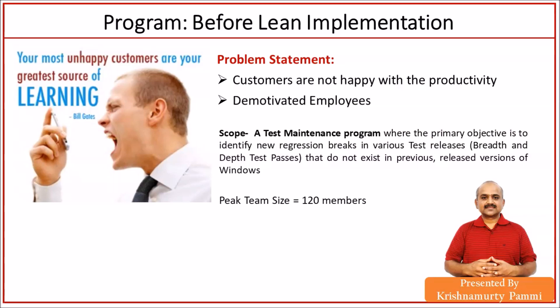Employees were also not happy for some reason. The customers gave an opportunity window of six months: if we could show improvement in productivity, they were willing to continue with us. If we didn't, they wanted to go for bidding with other vendors. It was a do-or-die scenario — that was the state where I was introduced to this program.